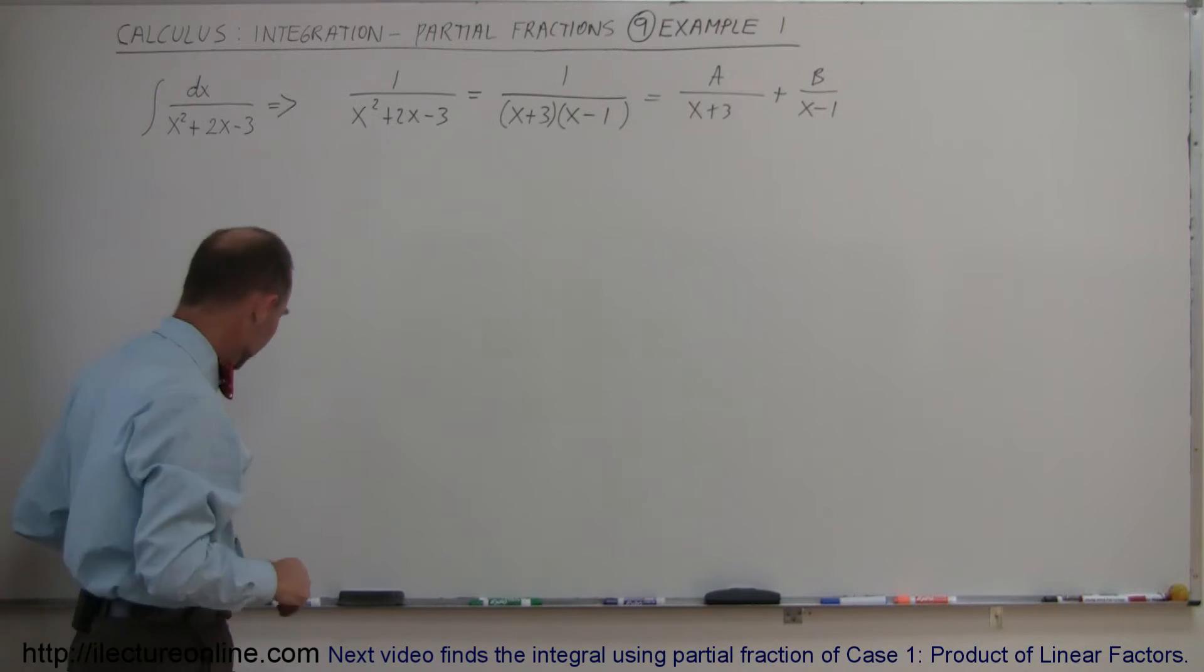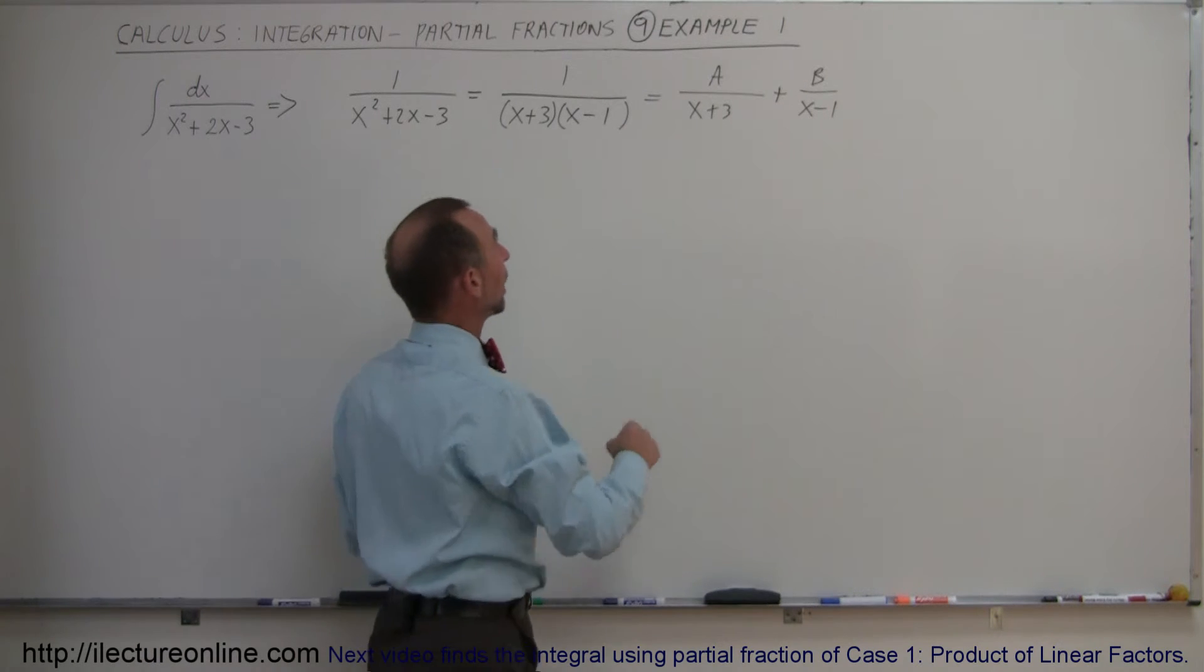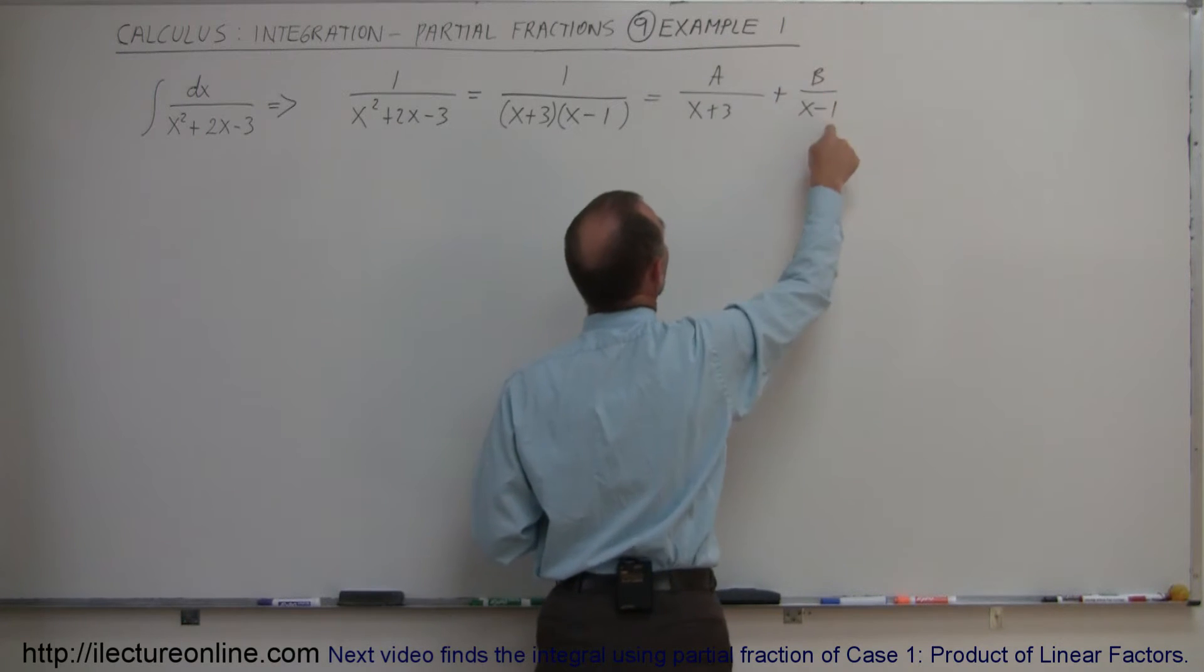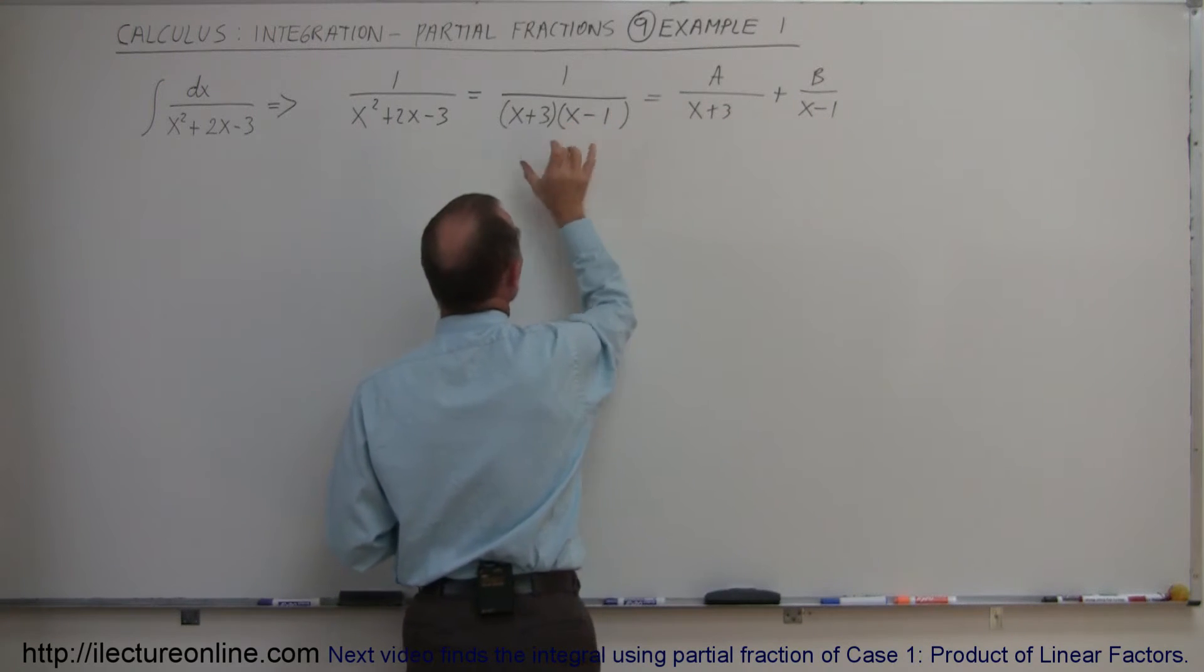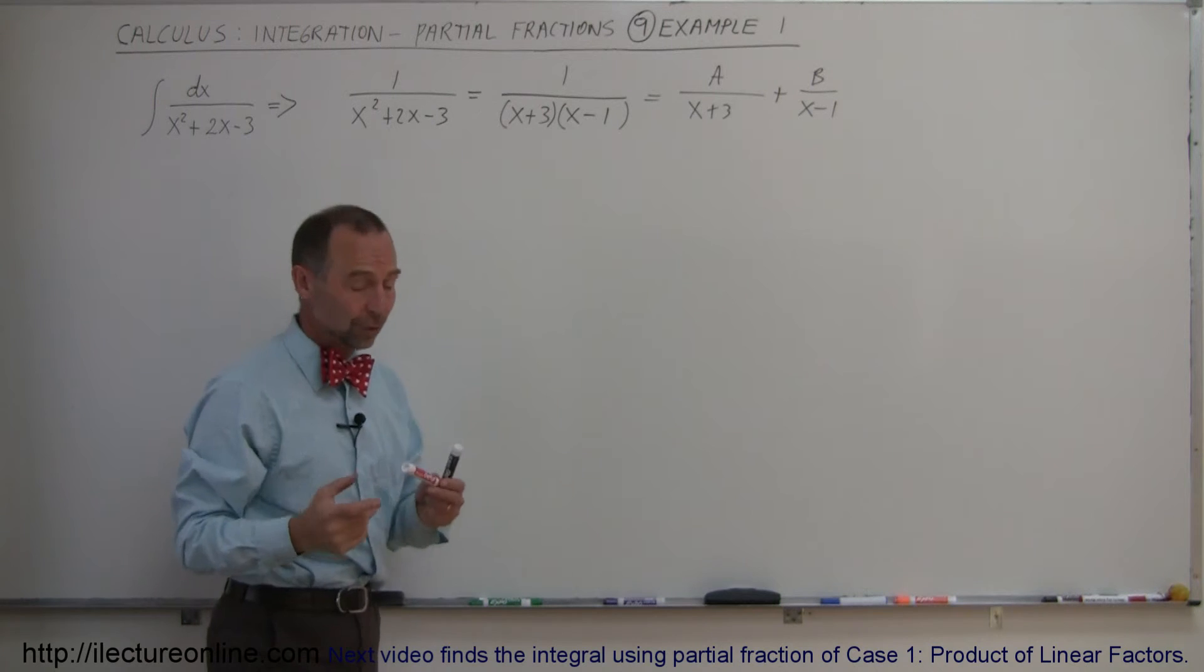To do that, we're going to multiply both the top and the bottom of each fraction, the numerator and denominator, by what we need to multiply with to make the denominator look like what we have over here.